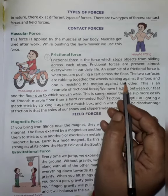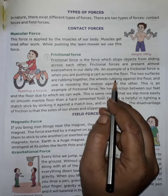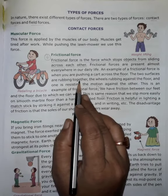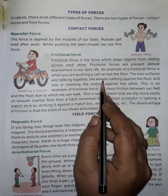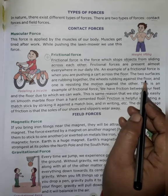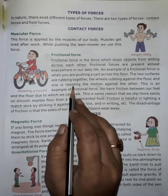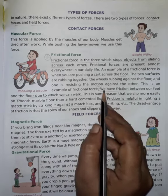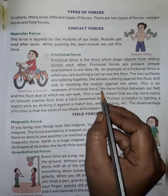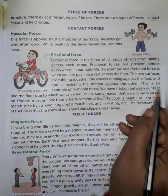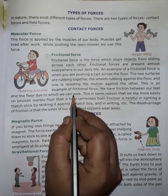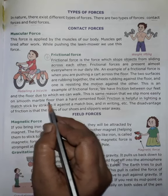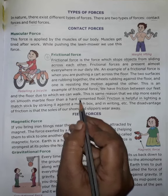Means, ye ek example hai frictional force ka — jab hum kisi cart ko floor pe ragadte hain, toh do surfaces aapas mein ek doosre ko ragadte hain. We have friction between our feet and the floor due to which we can walk. We slip more easily on a smooth marble floor than on a hard cemented floor.